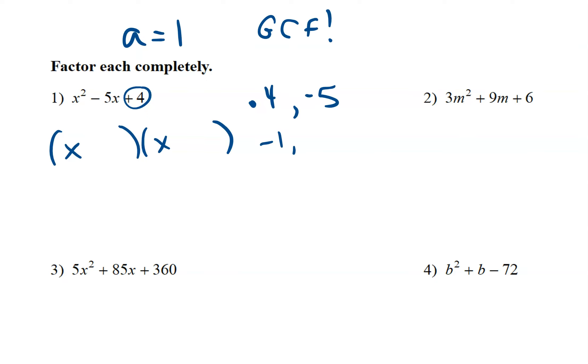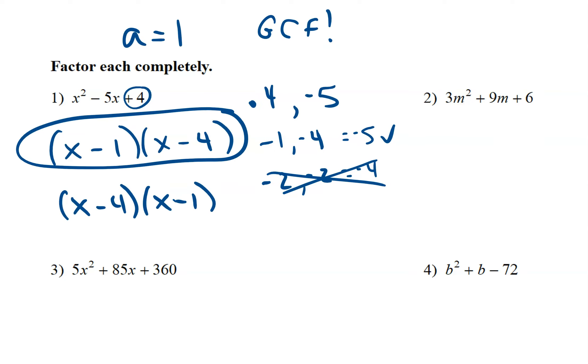So negative 1 and negative 4, or negative 2 and negative 2. Well, the first set adds to give us negative 5, which is what we want. The second set adds to give us negative 4, which is not. So it's going to be x minus 1 and x minus 4. Again, if you write it x minus 4 times x minus 1, that's the very same thing. So that order doesn't matter.